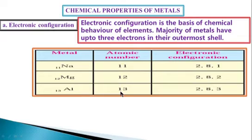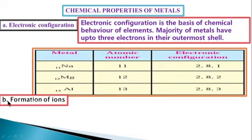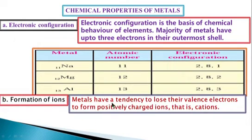Aluminium (atomic number 13) has electronic configuration 2, 8, 3 — there are three electrons present in the outermost shell of the aluminium atom. Formation of ions: metals have a tendency to lose their valence electrons to form positively charged ions, that is, cations. For example, sodium, when it reaches its stable state, releases one electron. Its electronic configuration goes from 2, 8, 1 to 2, 8 — the octet is completed and one electron is released.